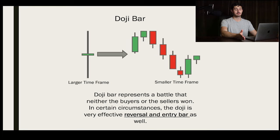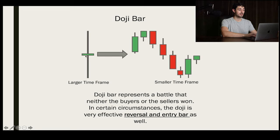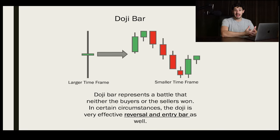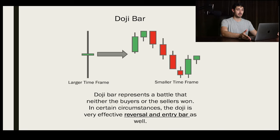Now let's look at the last candlestick you really need to know — the doji candle. The doji is a very useful candlestick that I personally use in my trading every single day, specifically for entries and reversals. With a doji bar, the open is very near the closing price — the open and close are basically at the same price. That indicates the battle between buyers and sellers was a tie. Nobody really won. It opened at the same spot and closed at the same spot, and it's a really great bar to use for entries.